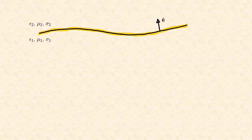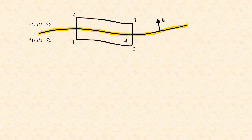Imagine an interface between two different materials. For electromagnetic waves this means different permittivity, permeability or conductivity. The interface is a two-dimensional plane. And to distinguish the two sides we define a normal vector E on the interface. In the next step we define an area A with certain special properties. The length of this intersection line is delta L.